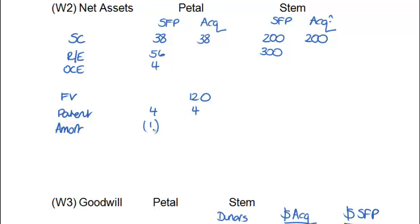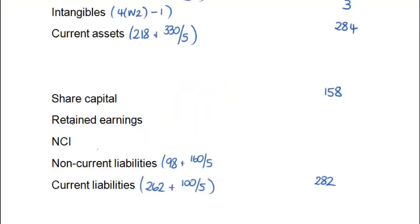We're then told the retained earnings and OCE totals in respect of PETAL, so it's a case of slotting those in. In theory they should all add up to 120 million, but they don't, and the reason is that we've got a further fair value adjustment which we work out as a balancing figure. If we add together 38, 49, and 3, it gives us a grand total of 90 million. We've got 30 million as a balance, and because it's in relation to land there's no further adjustment for depreciation, but we've got to increase PPE by 30 million as well.